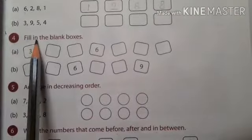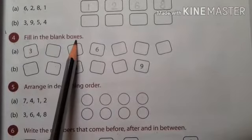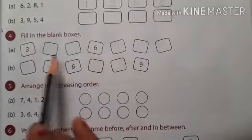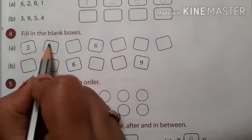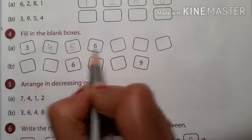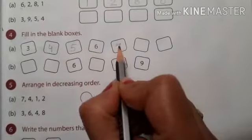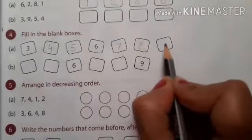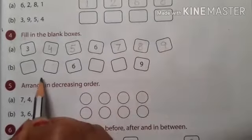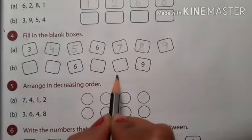Number 4. Fill in the blank boxes. Children, here you have to write the correct order: number 3, then 4, 5, 6, 7, 8, 9. Now you will do the next sum.